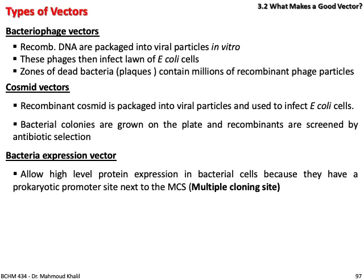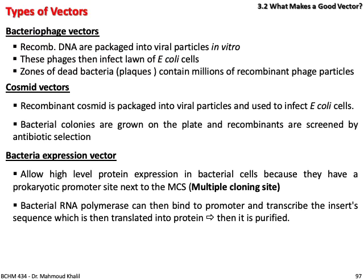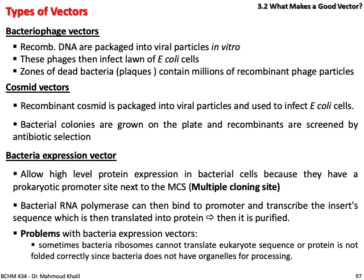Bacterial expression vectors allow high-level protein expression in bacterial cells because they have a prokaryotic promoter next to the multiple cloning sites. Bacterial RNA polymerase binds to the promoter, transcribes the insert sequence, and translates it into recombinant protein. The problem with bacterial expression vectors is that bacterial ribosomes sometimes cannot translate eukaryotic sequences, or the protein is not folded correctly, since bacteria lack the organelles for processing eukaryotic proteins.